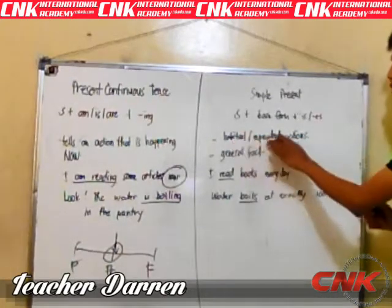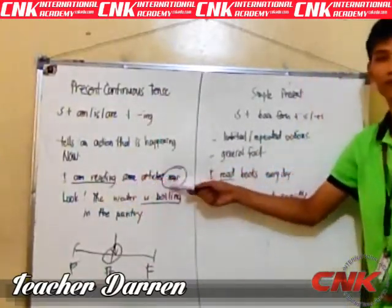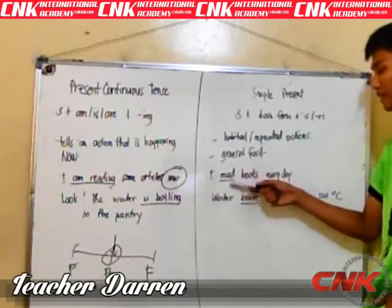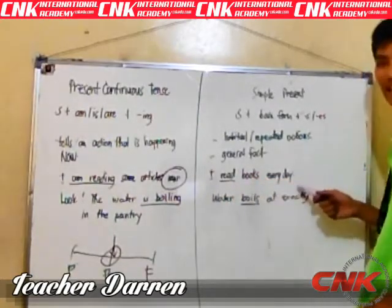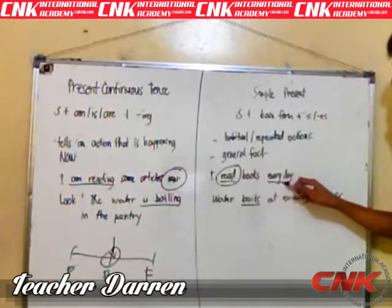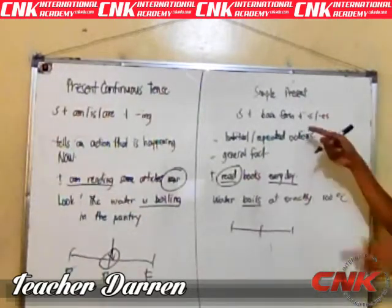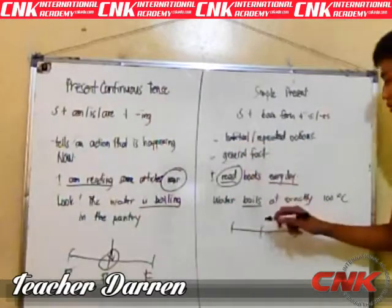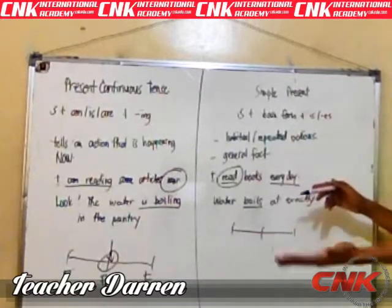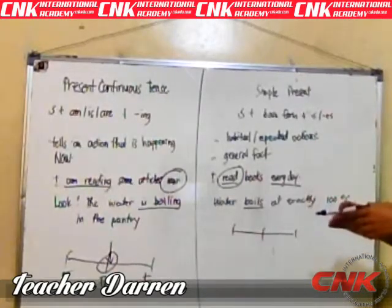Let's start with habitual or repeated actions. Here: I am reading some articles now — the action is happening now. Contrary to that, I read books every day — we use the base form, and there is the time marker 'every day.' If you look at the timeline, it means a habitual action. I read books every day: yesterday you read a book, today you might be reading a book, and tomorrow you might read a book.